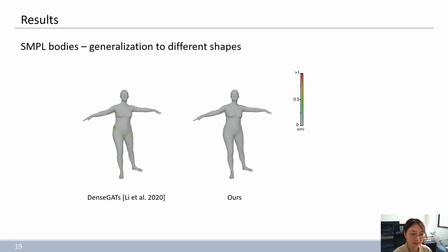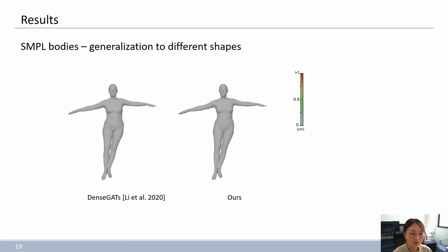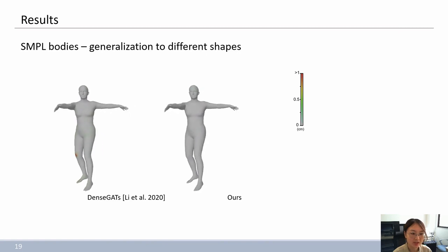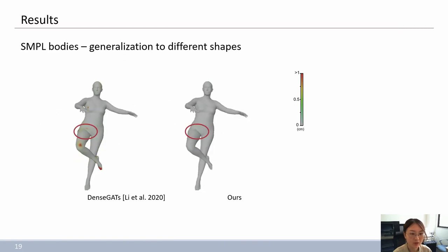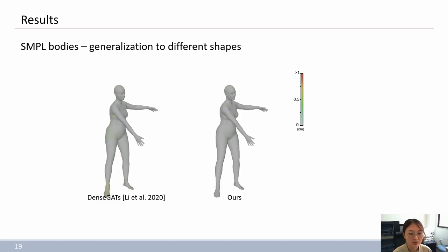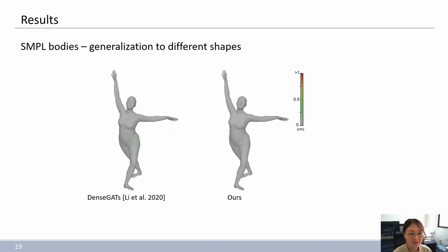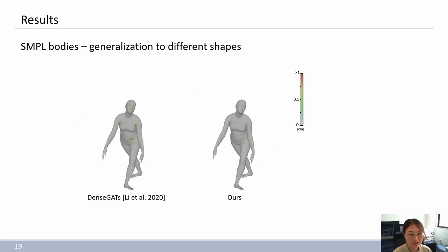Since this task is not complicated, both two methods have achieved satisfactory results with a very low average error. In contrast, our approach generated more natural deformations in the errors at base of the thigh and in the chest near the upper arm that is clasped.